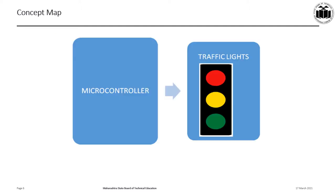This is the concept map of the traffic light controller. The traffic lights — red, yellow, and green — on each direction are interfaced to the port pins of the microcontroller, and the microcontroller is programmed to turn on and turn off the traffic lights in a predetermined order.